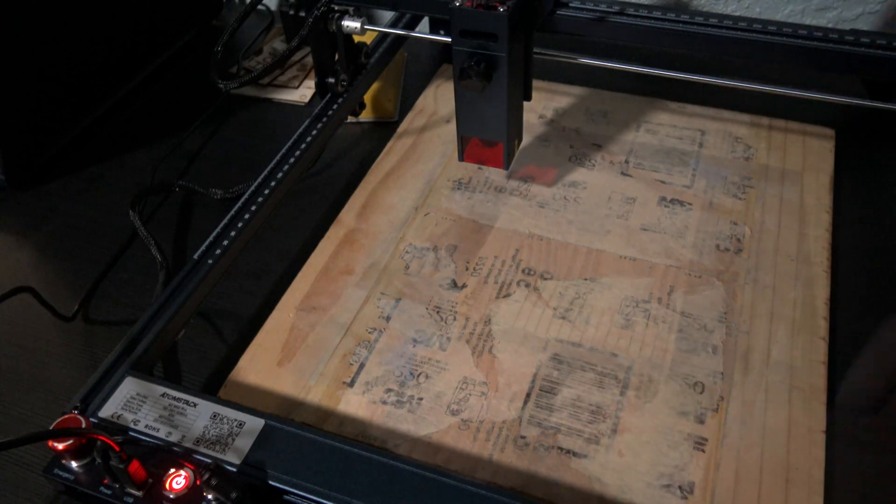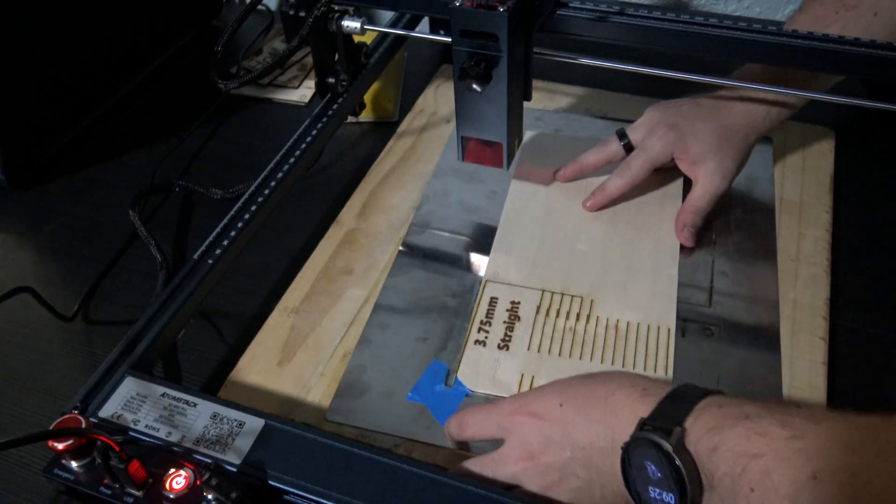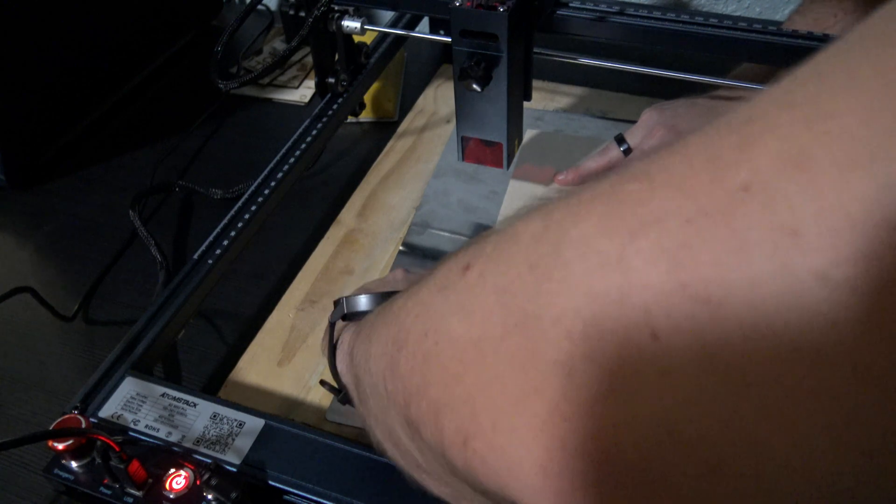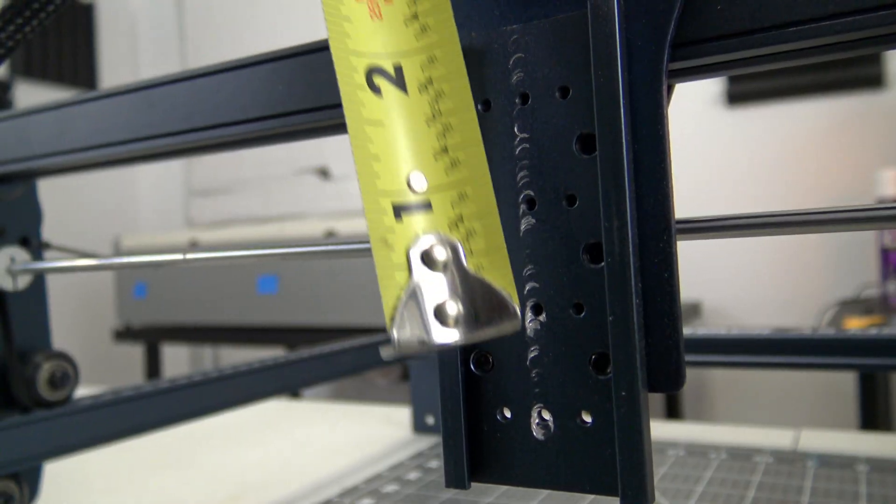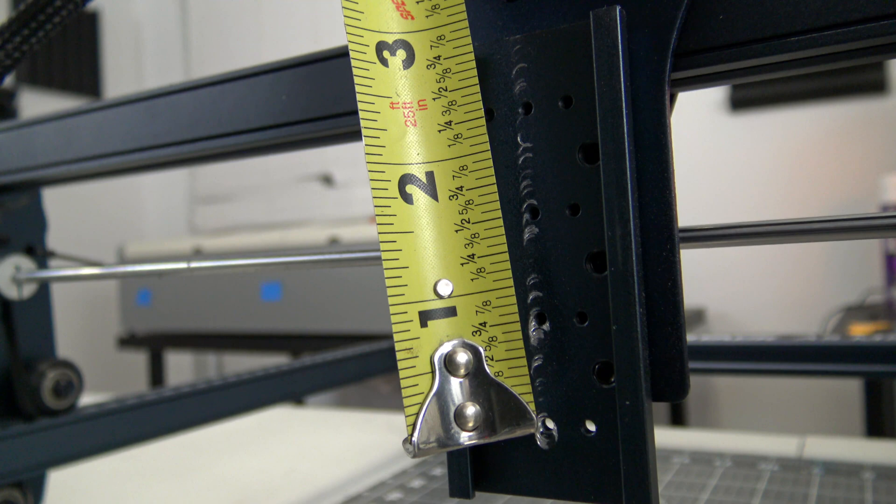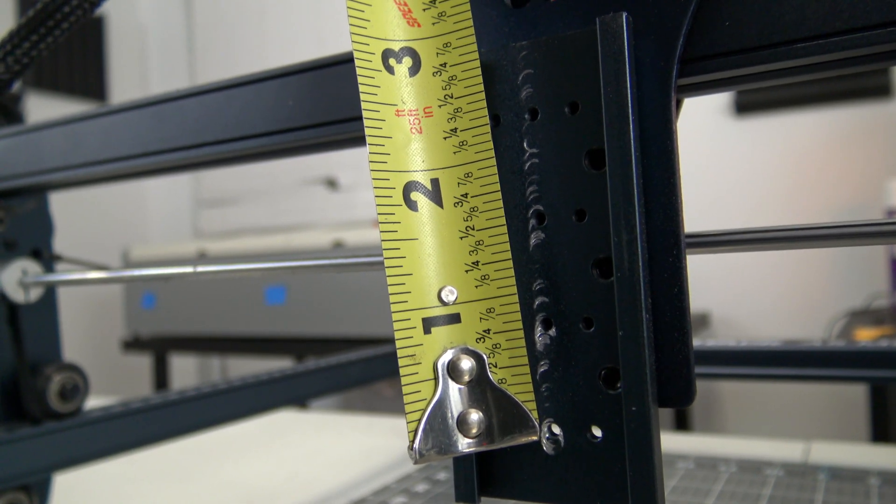So I added a three quarters of an inch riser underneath, but what would you know? These holes are spaced three quarters of an inch apart, so the same problem. Those holes do not serve a purpose, and it would be a much better experience if that back plate was solid.